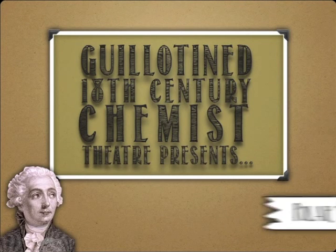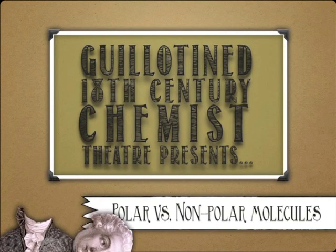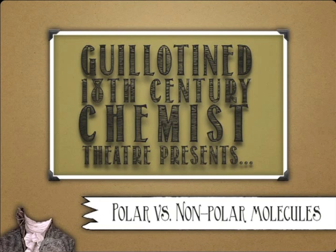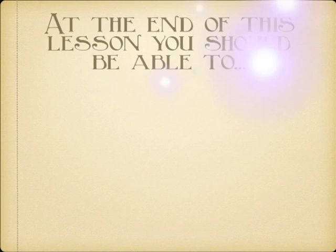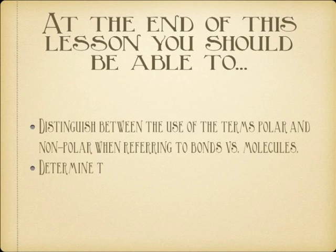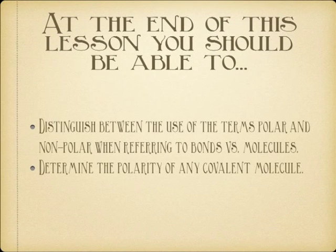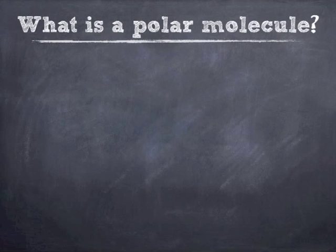Hello, and welcome back to guillotined 18th century chemist's theater. Today we are going to put together everything we've talked about in this unit to figure out whether a molecule itself is polar or nonpolar. And that's going to take looking at not only the types of bonds in the molecule, but how those bonds are arranged in a 3D structure.